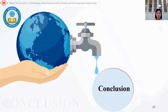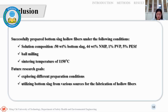The successful preparation conditions for the biochar hollow fiber solution are concluded as follows: a composition of biochar powder 50%, NMP 44%, PVP 1%, and PSF 5%, with a sintering temperature of 1,150 degrees Celsius.